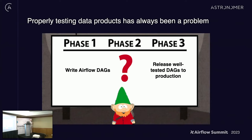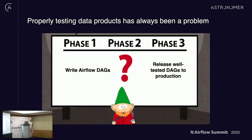How do you write DAGs that are well-tested? How do you develop against them? How do you find your bugs before you find them in production?